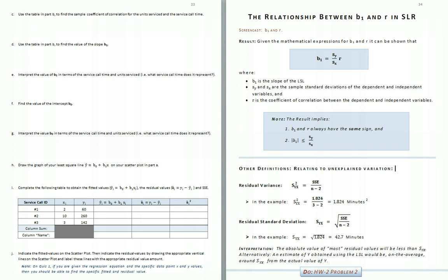The last items introduced are related to unexplained variation in simple linear regression. The first definition is of residual variance. The residual variance, S sub yx squared, is equal to the sum of square error divided by its degrees of freedom, n minus 2. Note the 2.